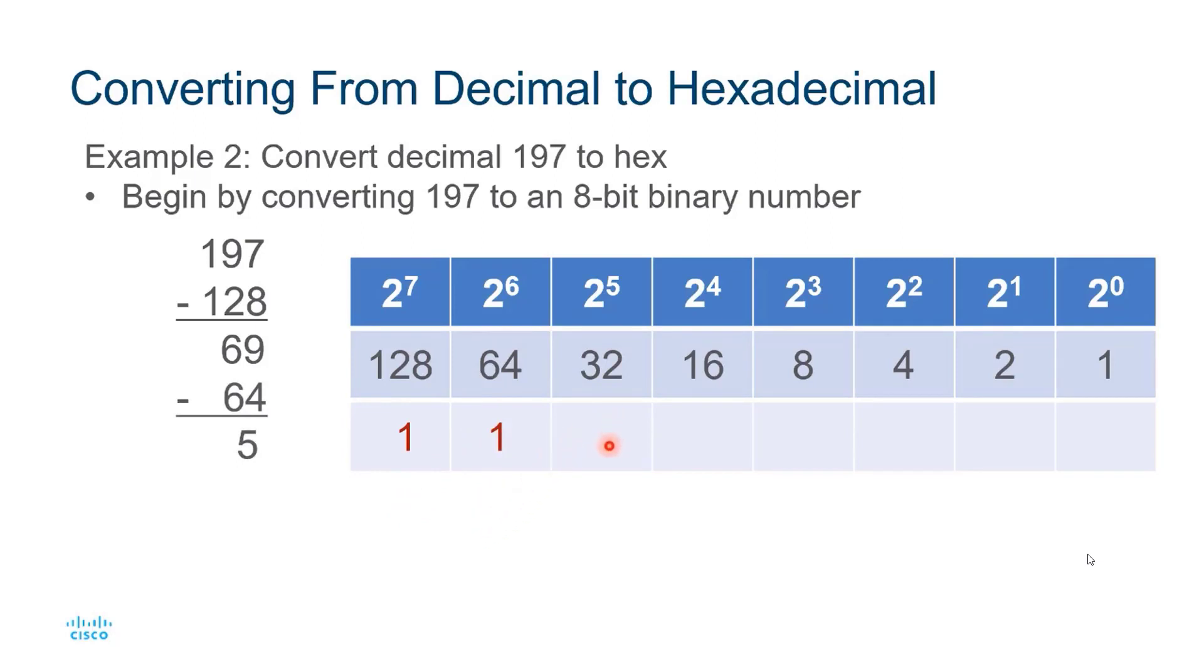32 is too big, so I'll place a 0 under that. 16 is also too big, so that gets a 0. 8 is also too big. But when I get to 4, I can subtract that, so I put a 1 there and I subtract it here. 2 is too much, so a 0 goes there. And 1 is just right, so I subtract it and it results in a 0. Therefore, decimal 197 equals binary 11000101.